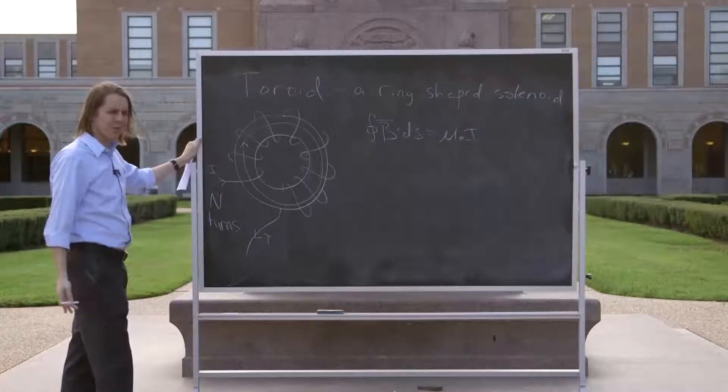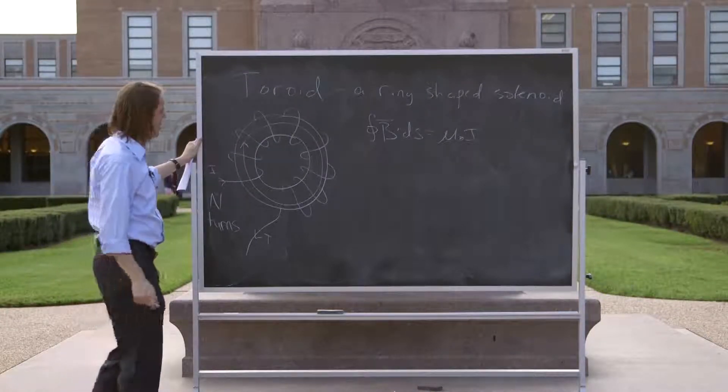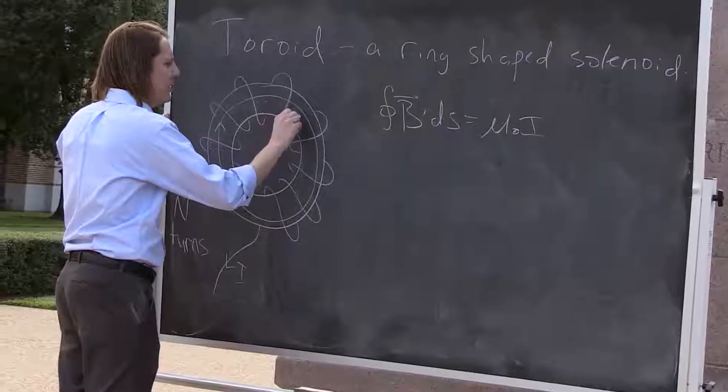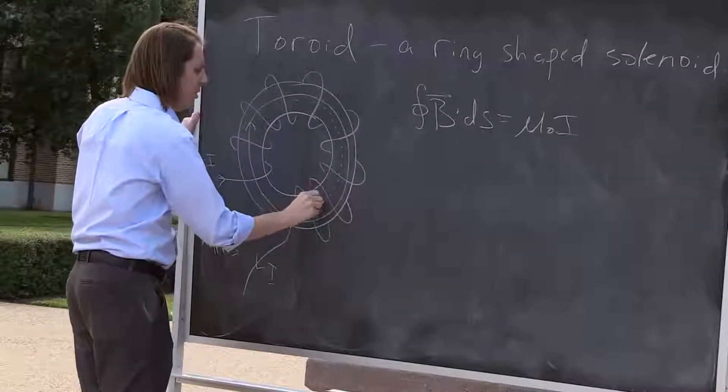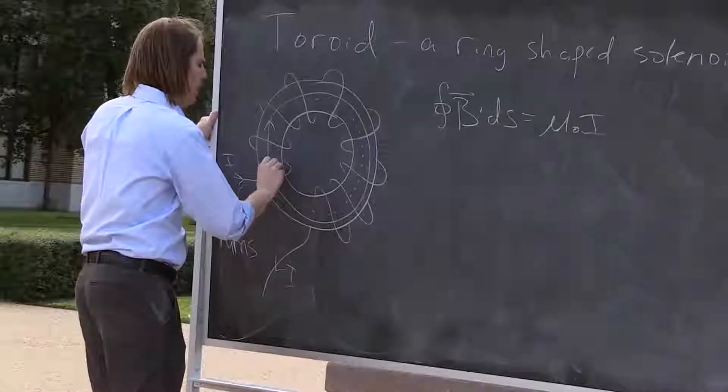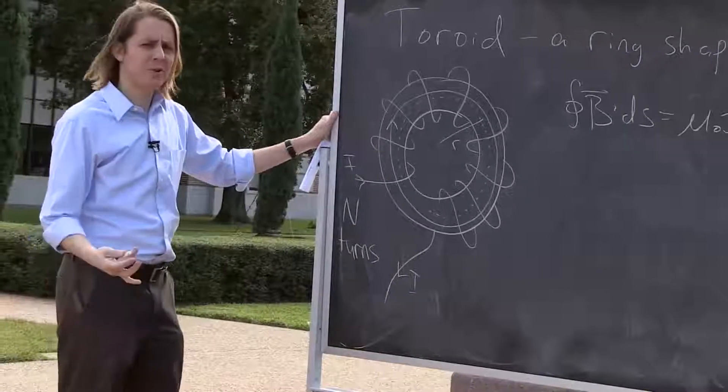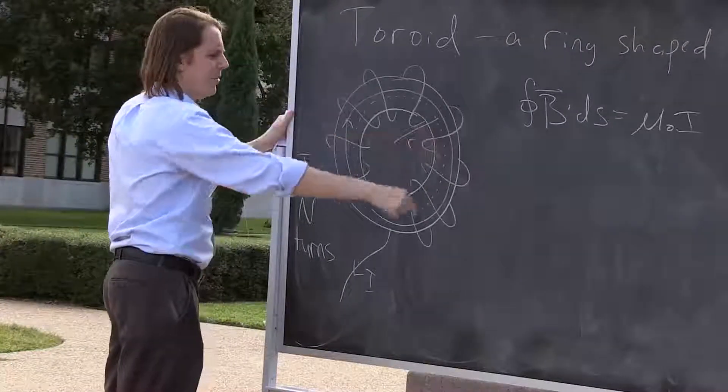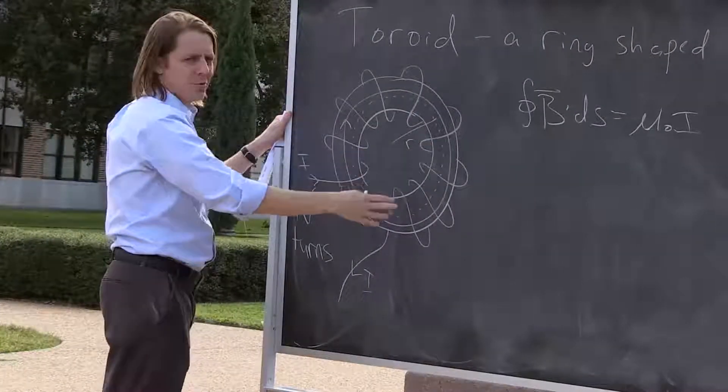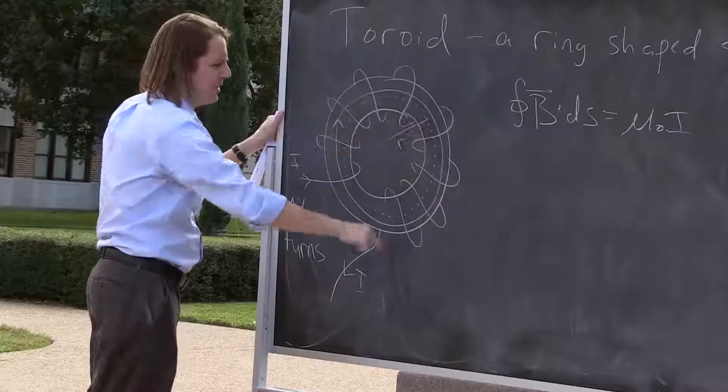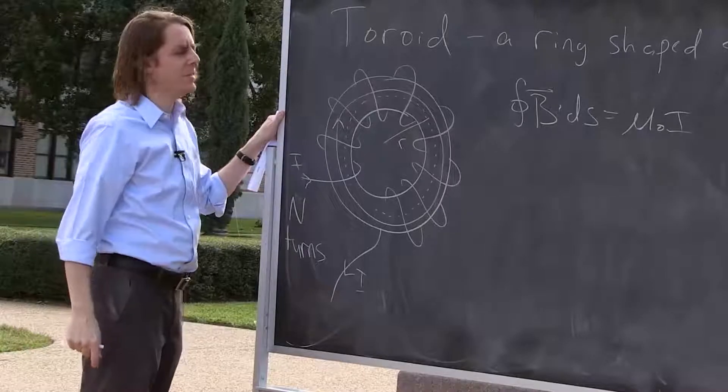So now what Amperian loop do we want to draw? Let's draw this one, one that goes right around with the field at a constant radius. Because due to symmetry we know that the B field, if it's going around the loop like this, it's not going to change if you don't change your radius. There's no reason it would change because everything is symmetric if you stay at one radius going through the toroid.